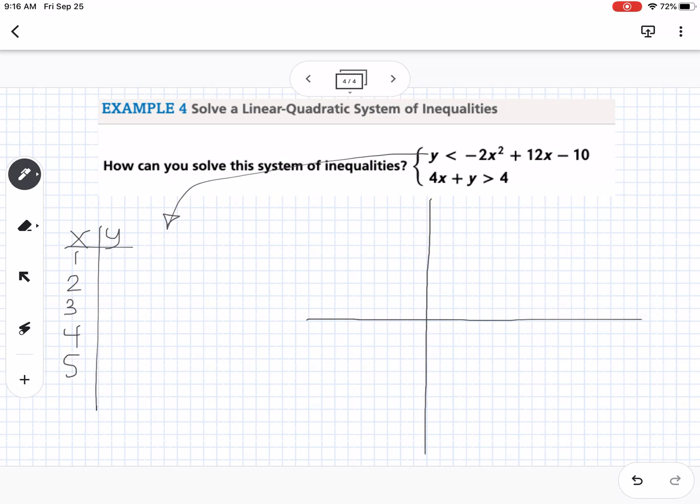So if I plug in 1 into my top equation, into negative 2x squared plus 12x minus 10, I get 0. If I plug in 2, I get 6. If I plug in 3, I get 8. And if I plug in 4, I get 6. If I plug in 5, I get 0.